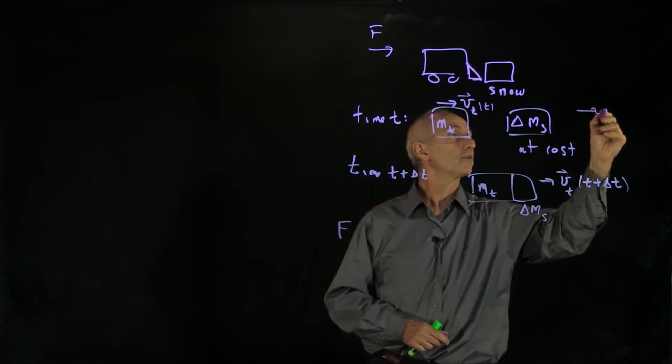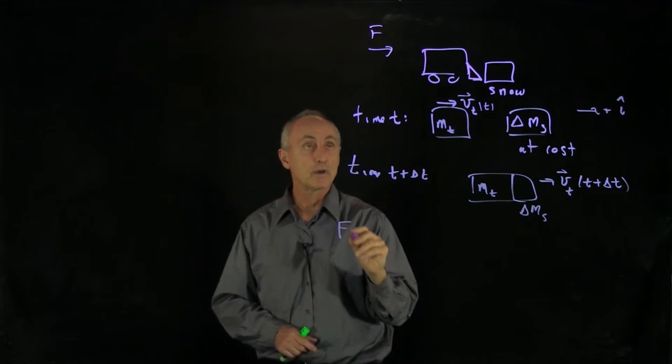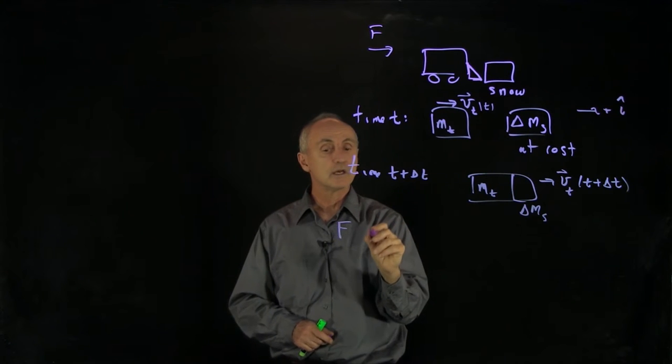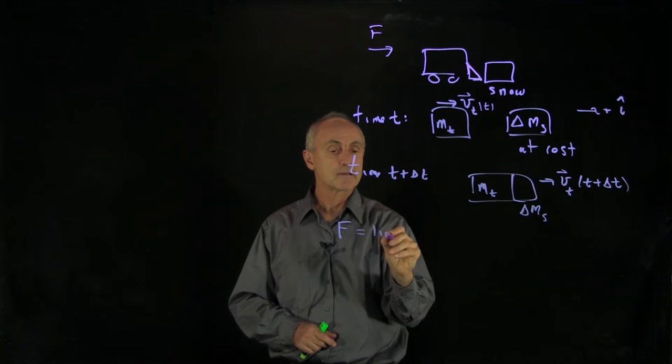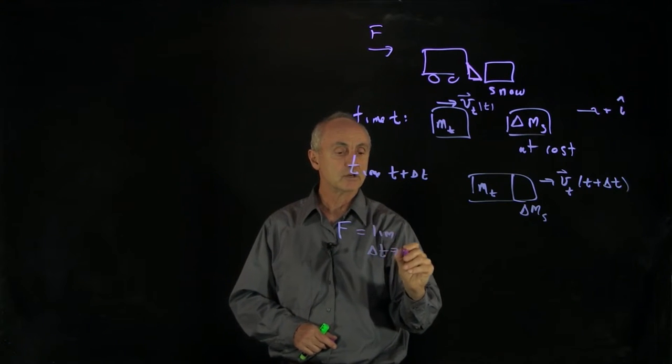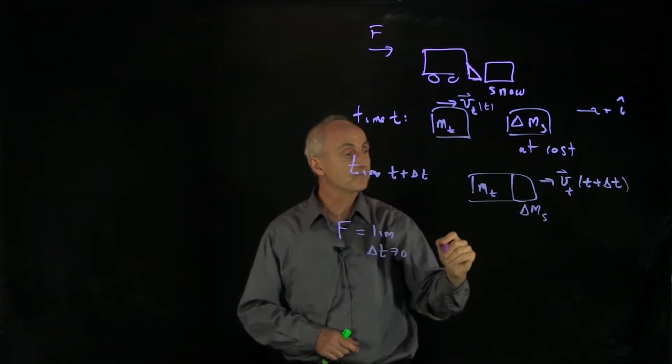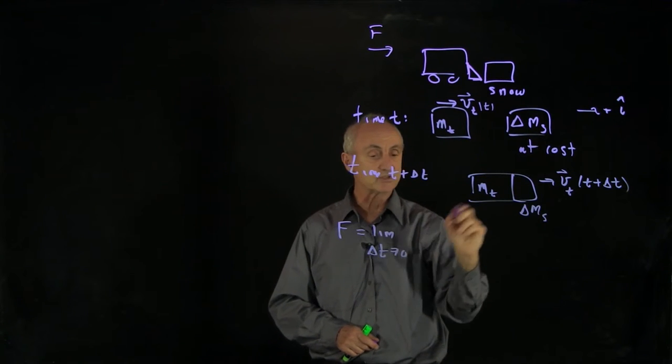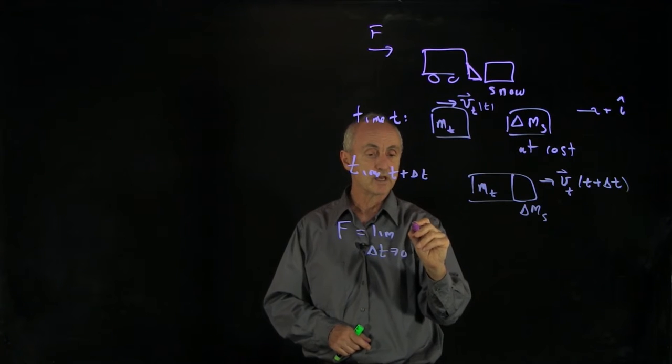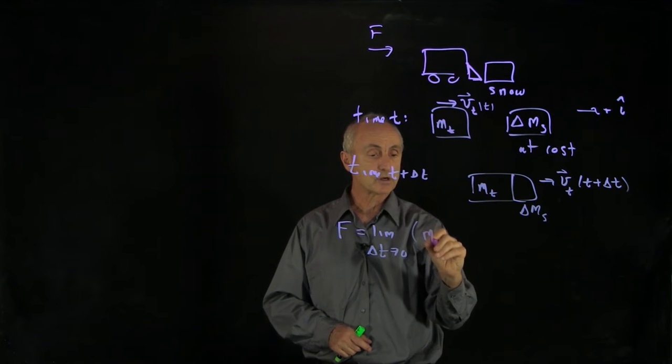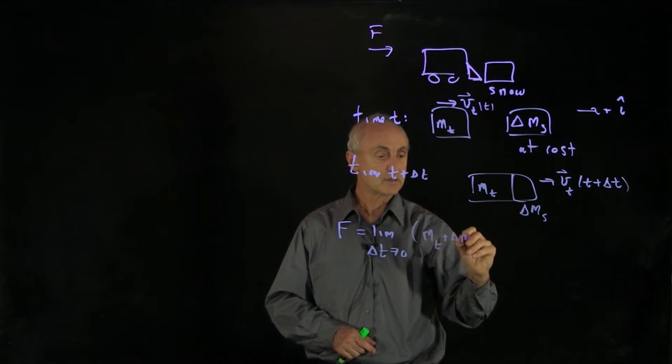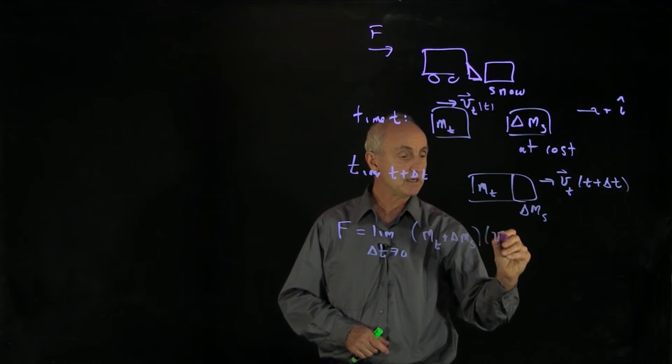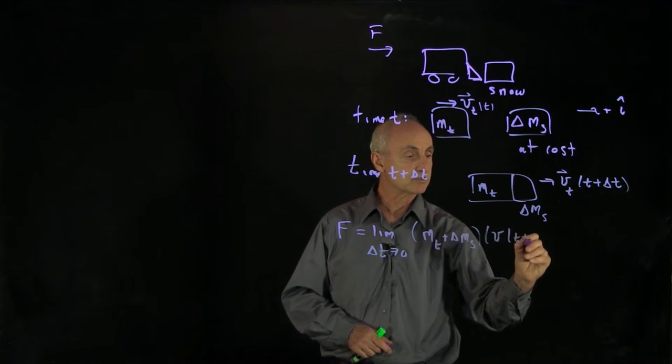Let's call this the plus i hat direction. We have our external force is equal to the limit, as delta t goes to 0, of the momentum at time t. So we have t plus delta t. So what we have is the mass of the truck, plus delta ms, times v of t plus delta t.